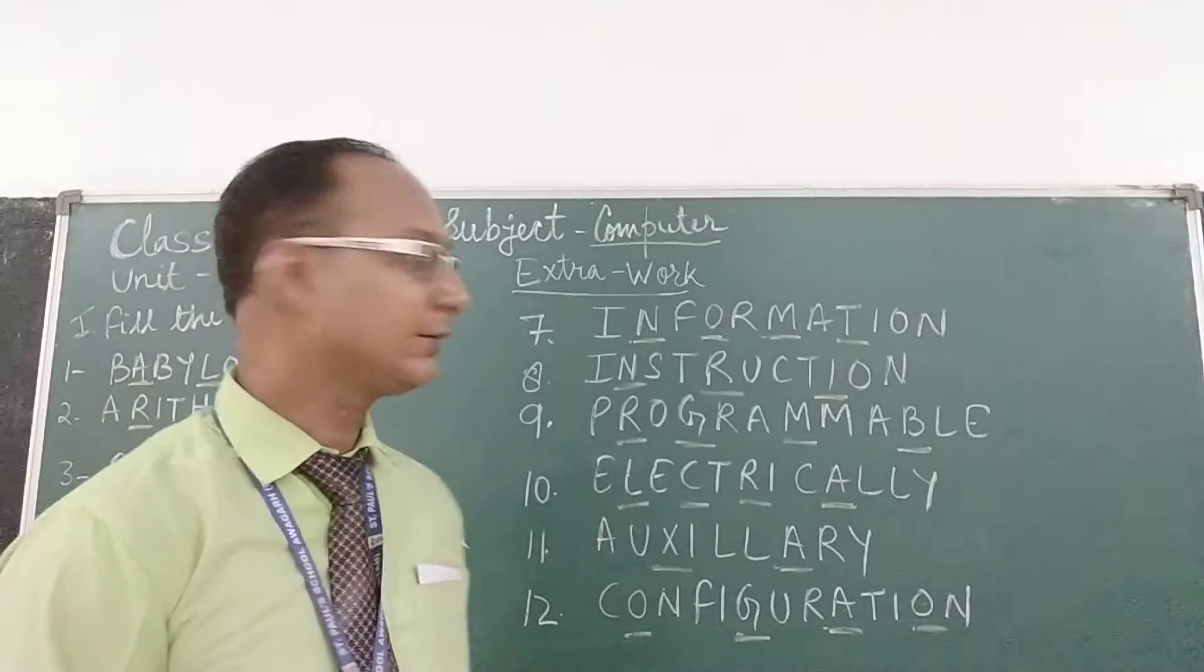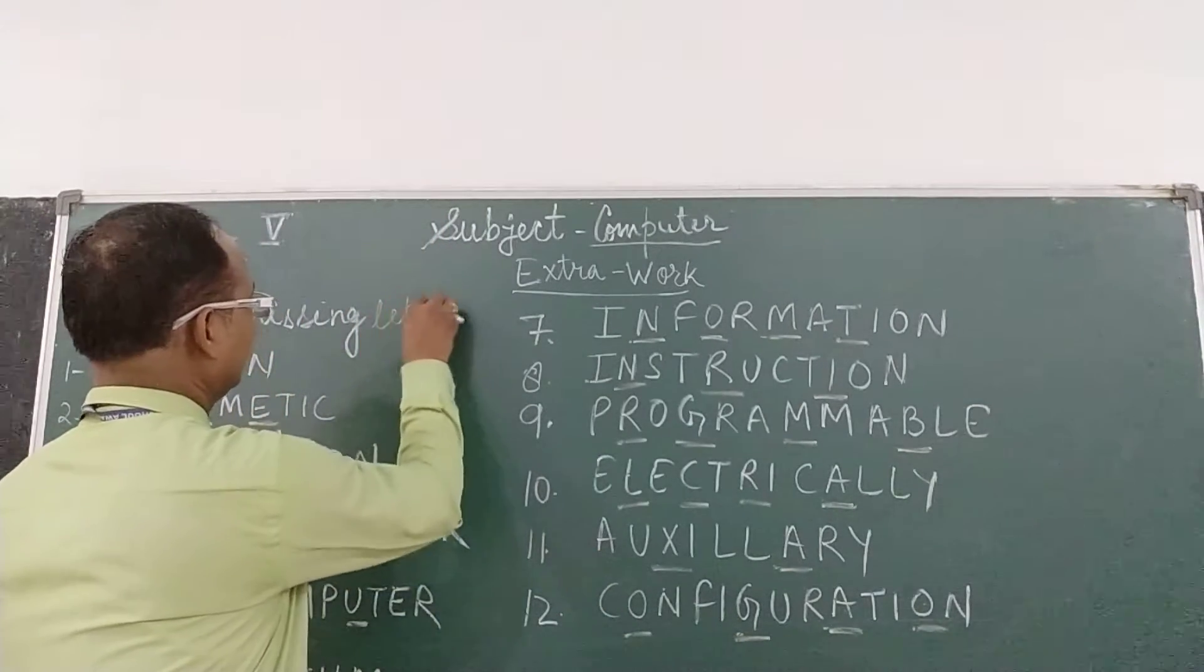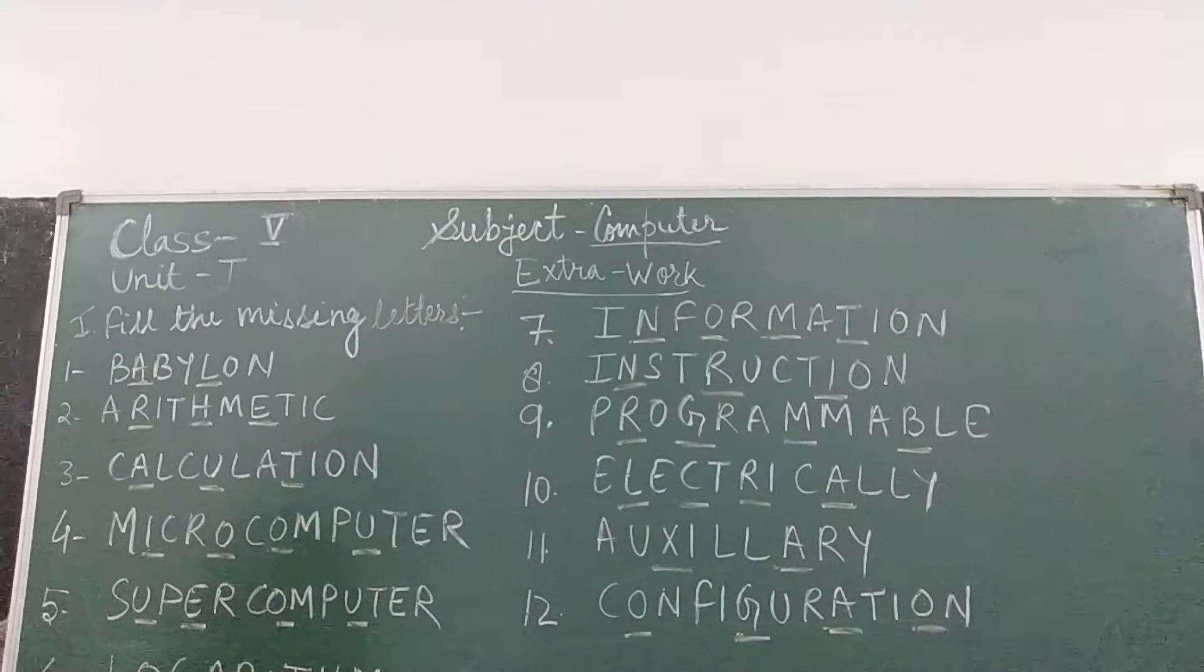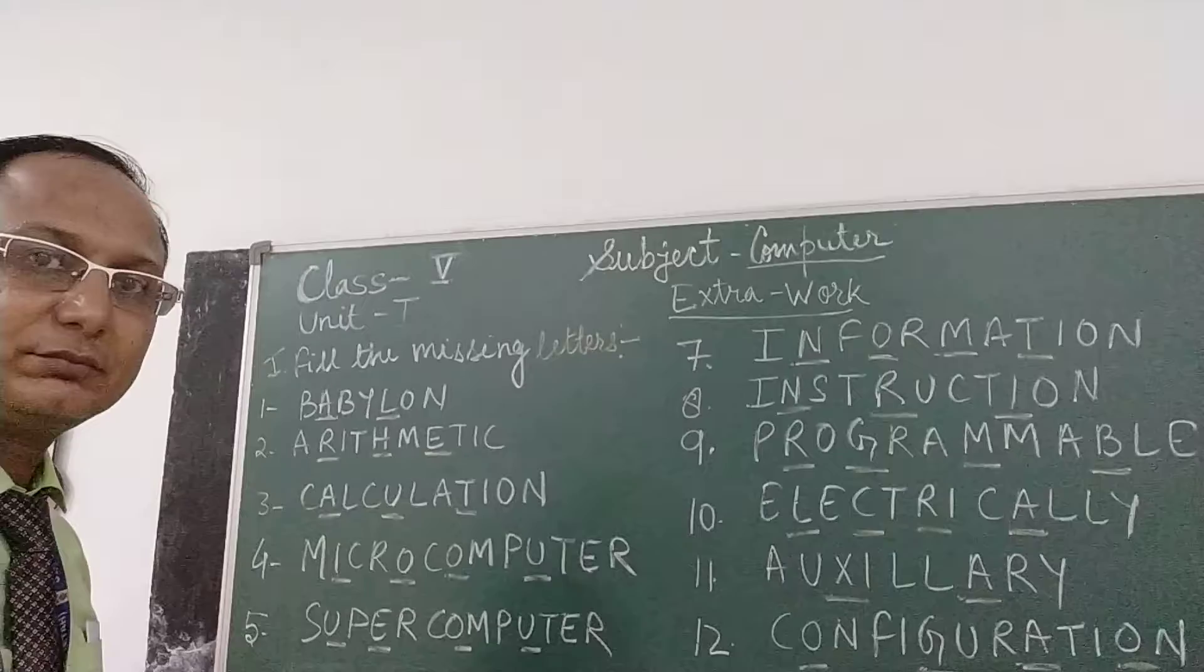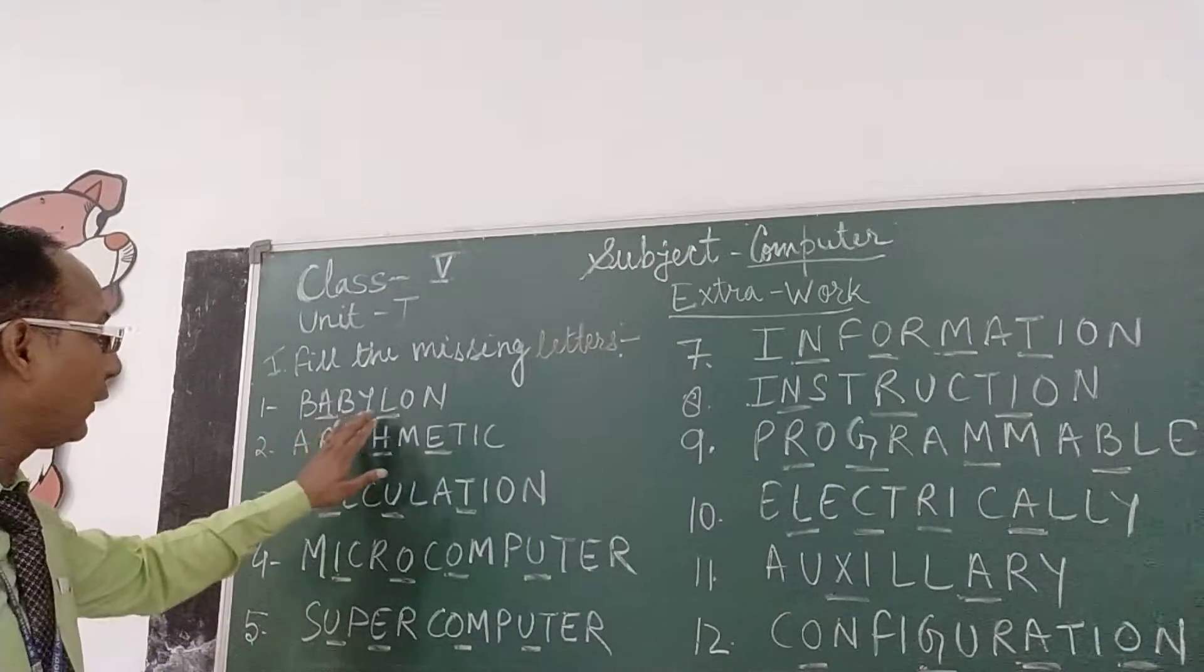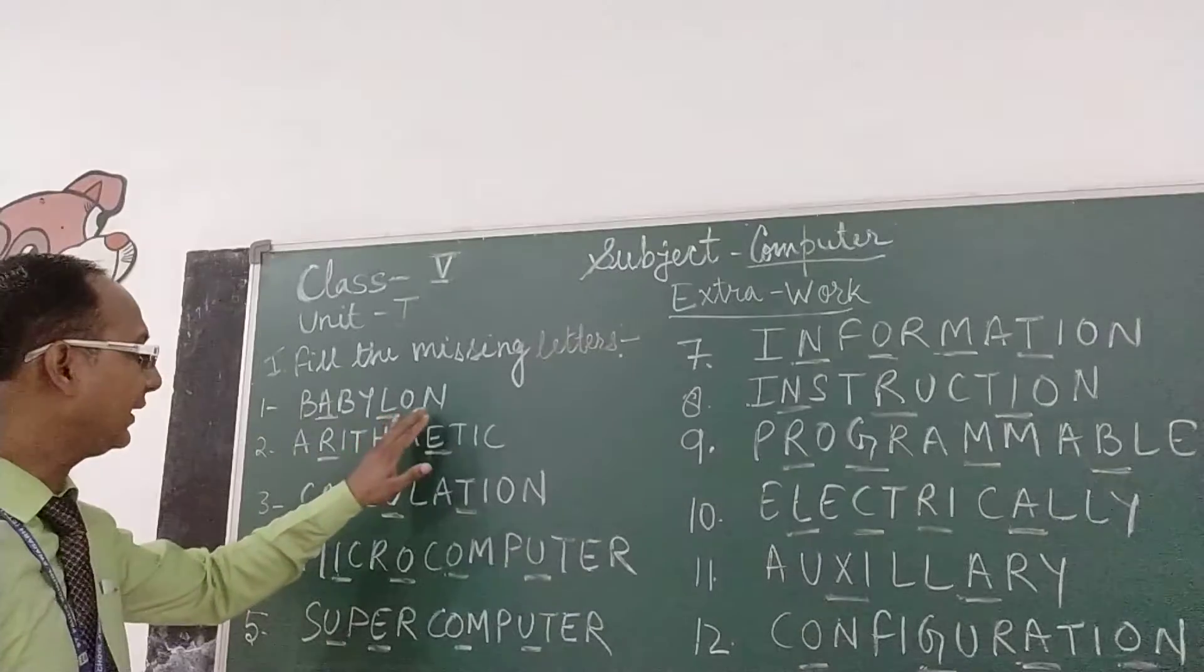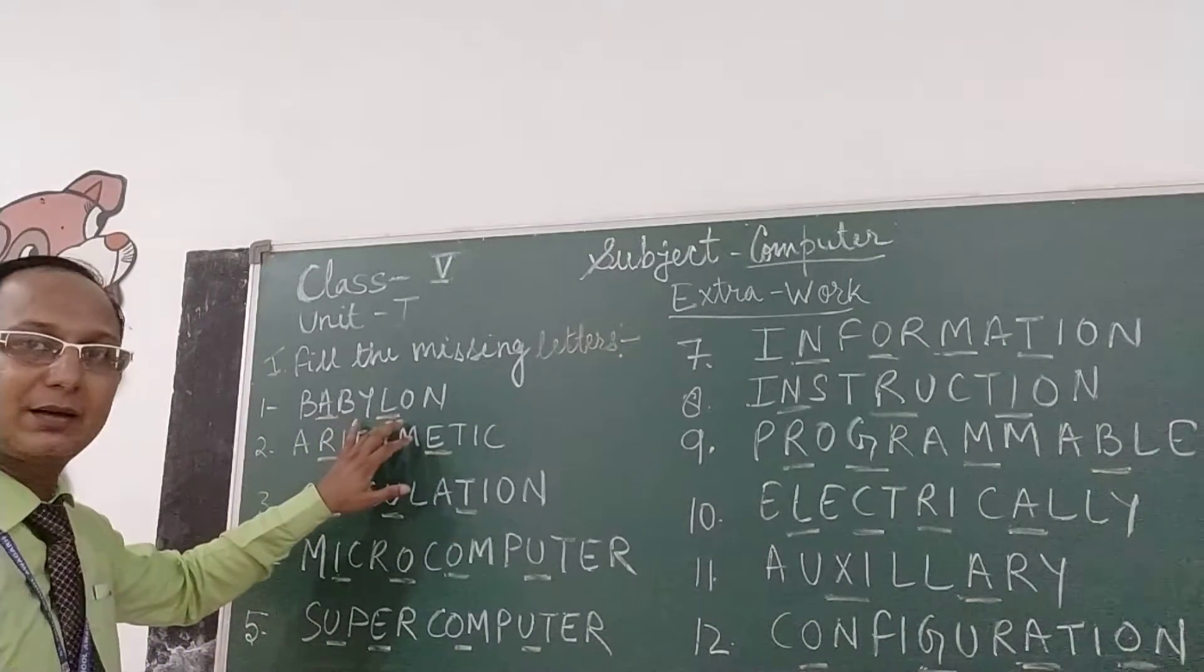Fill the missing letters. Now note out the first letter, note out first letter. First word may be known. I will spell out B-A-B-Y-L-O-N, BABYLON and underline the letters A and N.